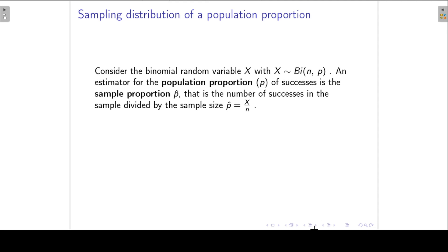Now consider the binomial random variable X with parameters n and p. An estimator for the population proportion of successes that we indicate with p is the sample proportion, p-hat. That is just the number of successes in the sample divided by the sample size, so p-hat equals X over n.